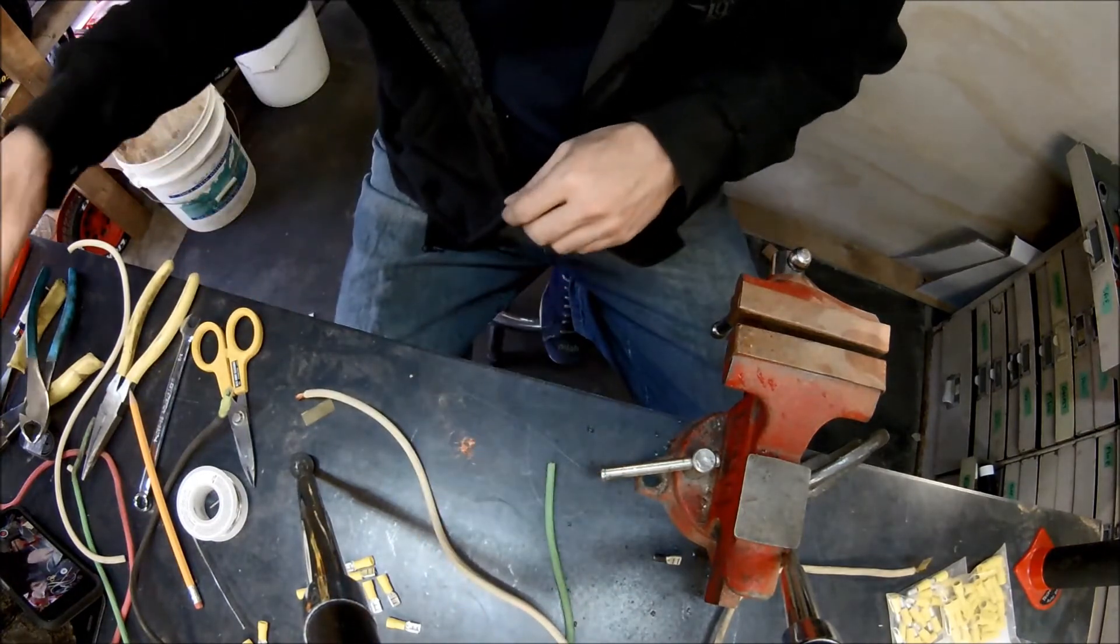Let's get another piece of heat shrink tubing. Make sure I slip it back far enough that it doesn't become stuck on the wire when I'm doing my solder joint.